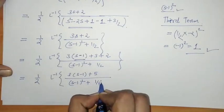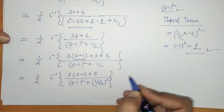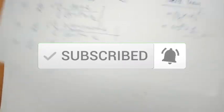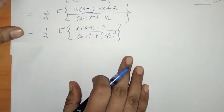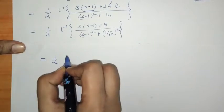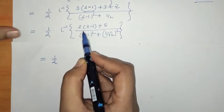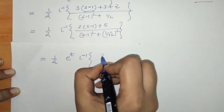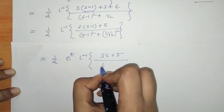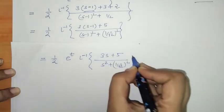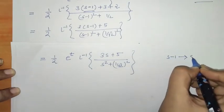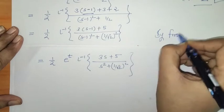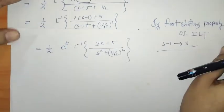We write 1/2 as (1/√2)². Now it is ready for applying the first shifting property. We take the factor 1/2 outside and write e^t by the first shifting property, with the remaining expression in terms of s: L-inverse of [3s + 5] upon [s² + (1/√2)²], where s replaces (s − 1).